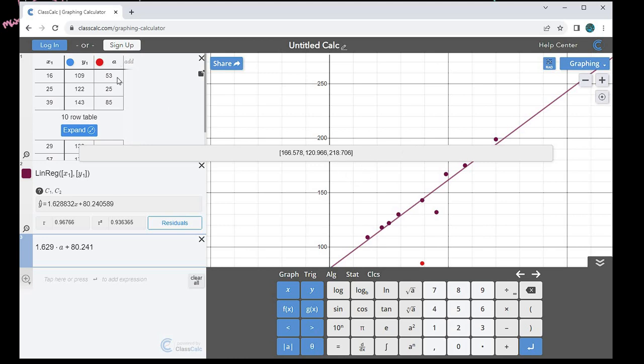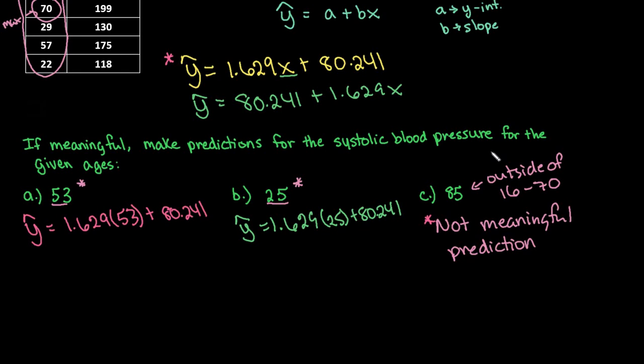But it saves you time to use the column to be able to find all three answers at the same time. So I'm going to write these answers down. When the age is 53, we could expect the systolic blood pressure to be approximately 167, because it was 166.578, but we just rounded it to approximately 167. And for the second one, it would be approximately 121.